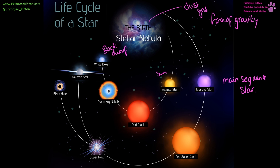If it is a large star — much, much more massive than our sun — it is going to become a red supergiant. It is going to undergo supernova, and then the dense, dense core of that is either going to turn into a black hole or a neutron star.